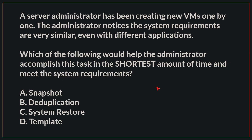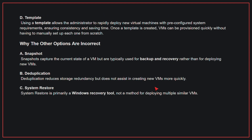A server administrator has been creating new VMs one by one. The administrator notices the system requirements are very similar, even with different applications. Which of the following would help the administrator accomplish this task in the shortest amount of time and meet the system requirements? The correct answer is D: Template. Using a template allows the administrator to rapidly deploy new virtual machines with pre-configured system requirements, ensuring consistency and saving time. Once a template is created, VMs can be provisioned quickly without having to manually set up each one from scratch.